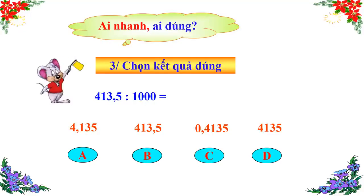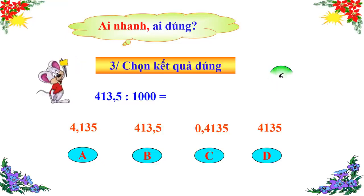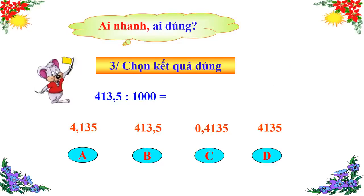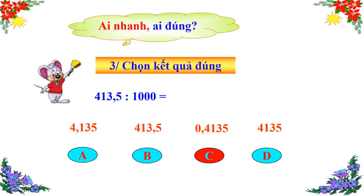Câu số 3: Chọn kết quả đúng. 413,5 chia 1000 bằng bao nhiêu? A: 4,135 — B: 413,5 — C: 0,4135 — D: 4135. Câu trả lời chính xác là câu C: 0,4135. Thầy chúc mừng tất cả những bạn chọn đúng đáp án C. Như vậy, để chia một số thập phân cho 1000, ta chỉ việc dời dấu phẩy sang bên trái ba chữ số là có ngay kết quả. Các bạn đã hoàn thành xuất sắc trò chơi!